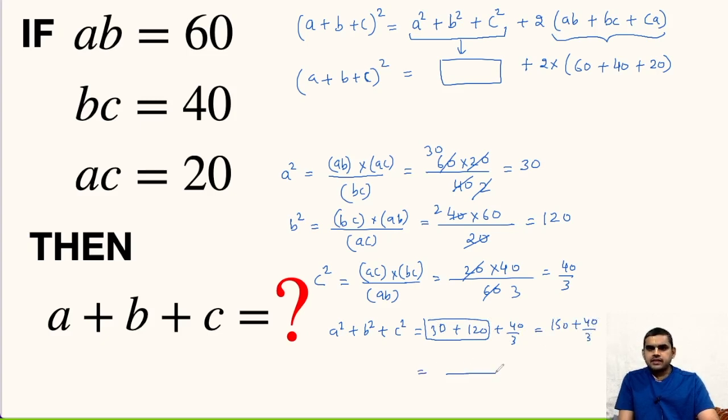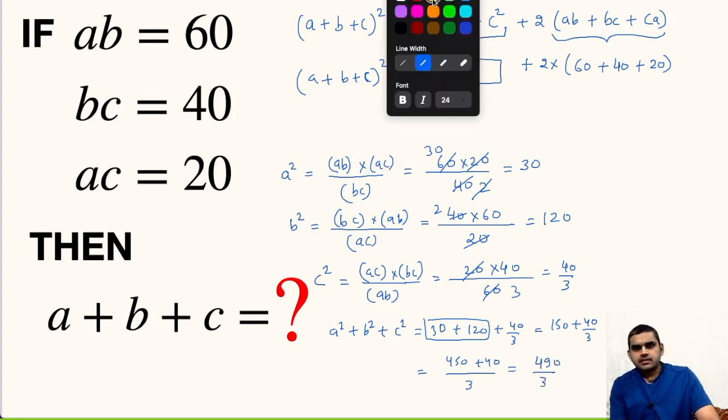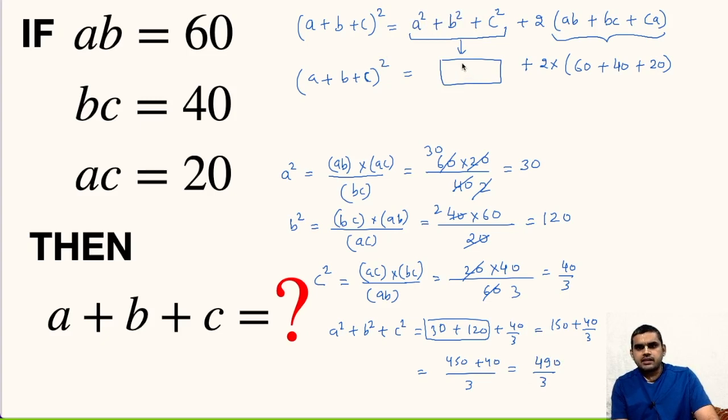We can take LCM as 3, 450 plus 40 will be in the numerator. So this is 490 upon 3. In this box we can write 490 upon 3.